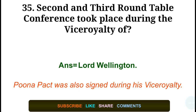Question number thirty-five: The Second and Third Round Table Conferences took place during the viceroyalty of — answer: Lord Willingdon. The Poona Pact was also signed during his viceroyalty.